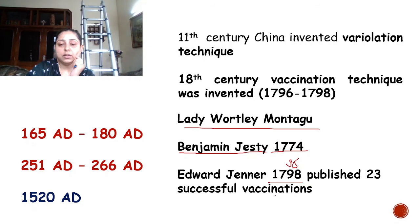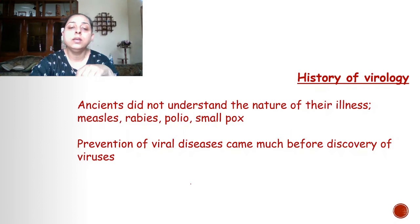If you look at the word 'vaccination,' it comes from 'vacca,' which means cow. So by the end of the 18th century, the vaccination technique was developed for prevention of viral diseases such as smallpox.